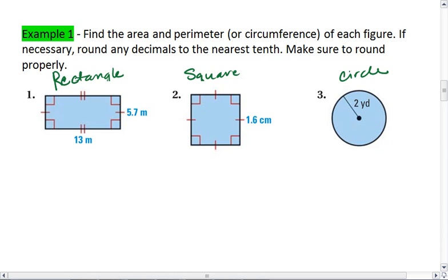For a rectangle, I know my perimeter is 2L plus 2W. Here, I can identify this as L. L is 13 and W is 5.7. Plugging these in,